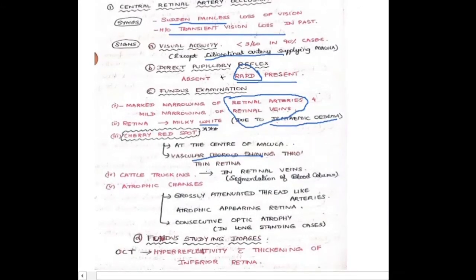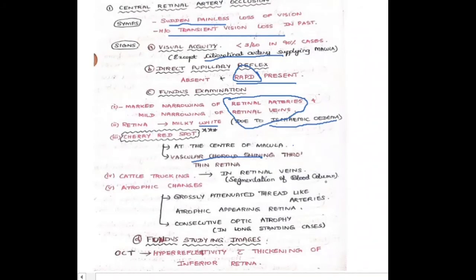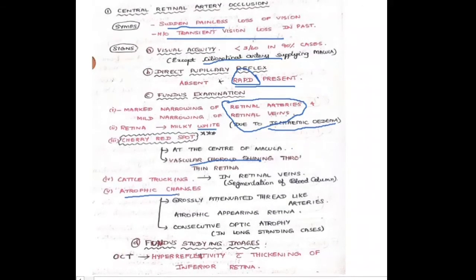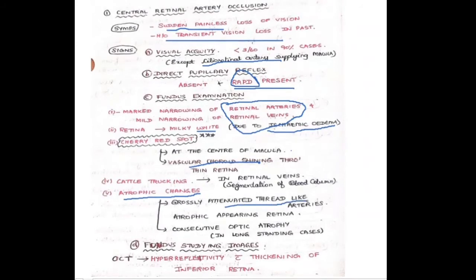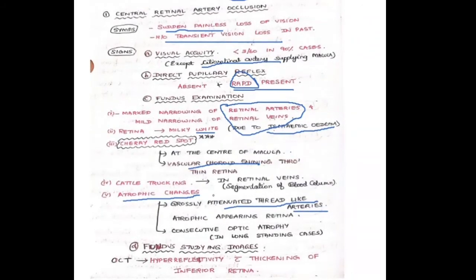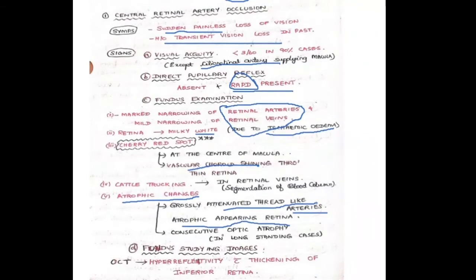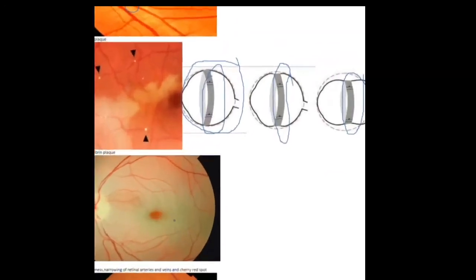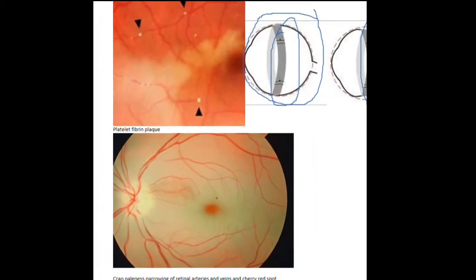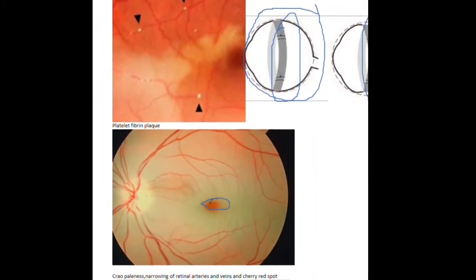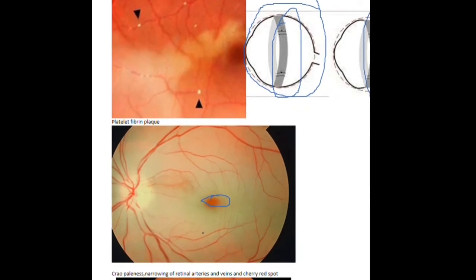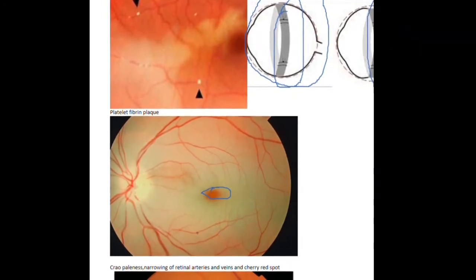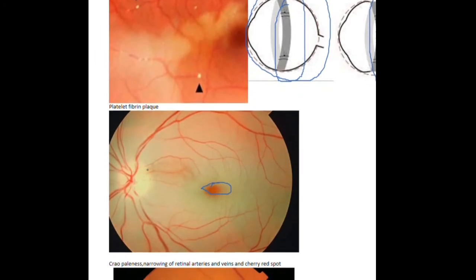Cattle tracking refers to segmentation of blood in the retinal veins, seen in patches — this is known as cattle tracking. Atrophic changes also occur; attenuated, thread-like arteries can be seen due to occlusion. In long-standing cases, optic atrophy may develop. On fundus images, the pale retina is clearly visible, the cherry red spot is seen at center, and the retinal vessels show narrowing.